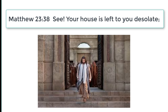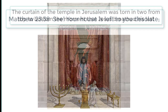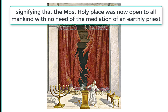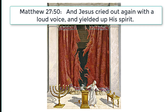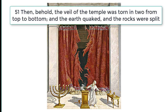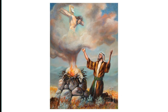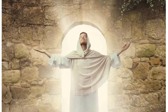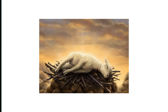Matthew 23:38 reads, See, your house is left to you desolate. The curtain of the temple in Jerusalem was torn in two from top to bottom the moment that Jesus breathed his last, signifying that the most holy place was now open to all mankind, with no need of the mediation of an earthly priest. Matthew 27:50 reads, And Jesus cried out again with a loud voice and yielded up his spirit. Then, behold, the veil of the temple was torn in two from top to bottom, and the earth quaked, and the rocks were split. The symbolic sacrificial lamb and the sanctuary were made obsolete when the life, death, and resurrection of Jesus fulfilled prophetic symbols. Animal sacrifices pointing forward to the death of the Son of God were no longer necessary.